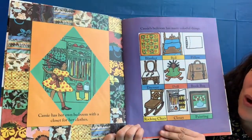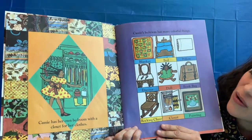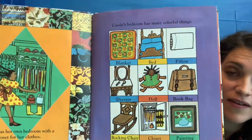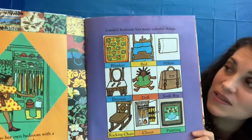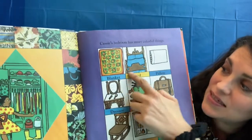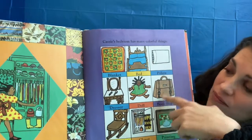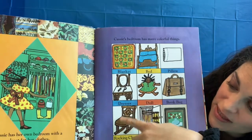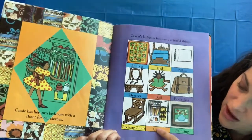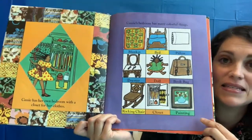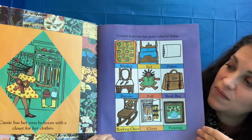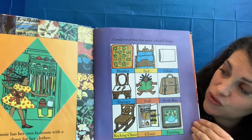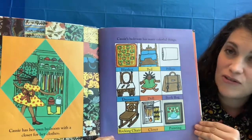Cassie has her own bedroom with a closet for her clothes. Cassie's bedroom has many colorful things. What do we see? A blanket, a bed, a pillow, a book bag, a doll, a dresser, a rocking chair, a closet, and a painting. Pretty cool — she's using the things she sees in her life to make her story quilts and tell a story.